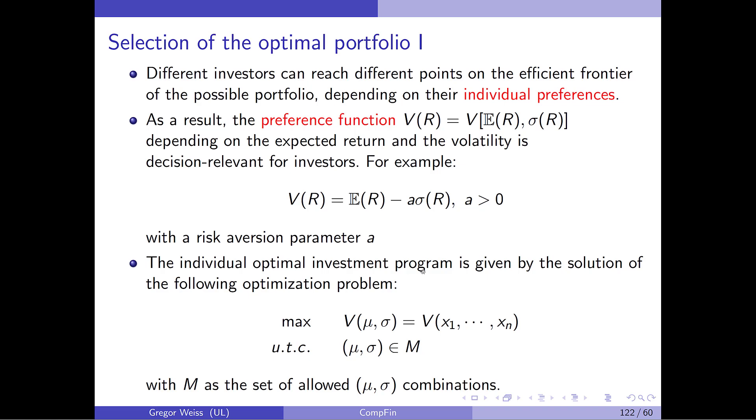Then, the individual optimal investment program is simply given by we want to maximize this preference function, we want to maximize the utility over the portfolio weights x1 through xn under the condition that the portfolios that we choose, so mu and sigma, are actually part of the set of allowed mu-sigma combinations, so it's a feasible portfolio that is this constraint here.